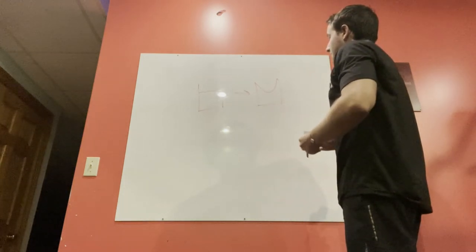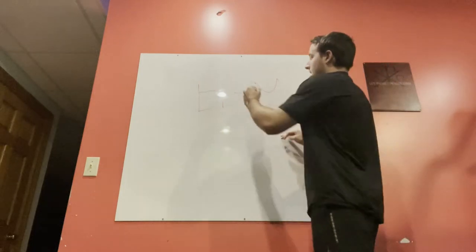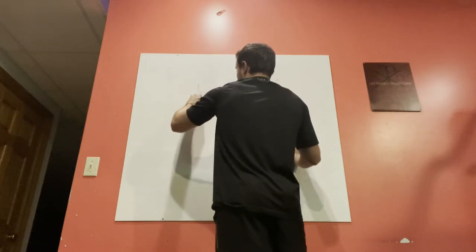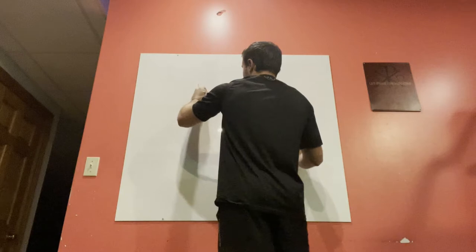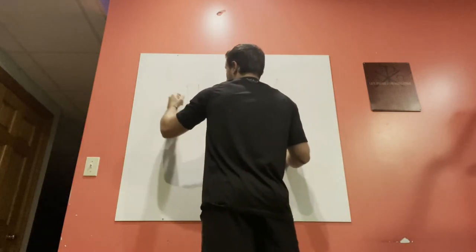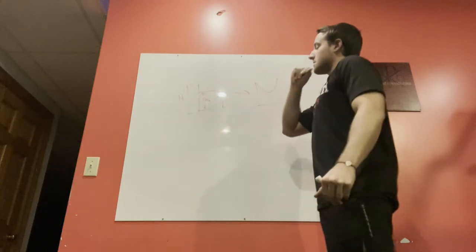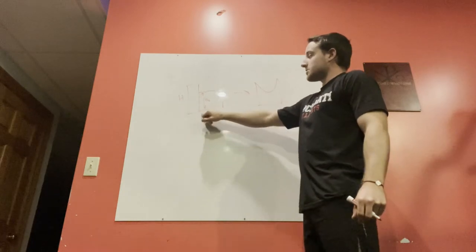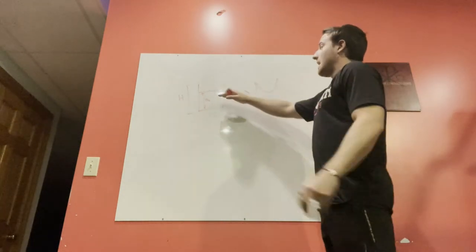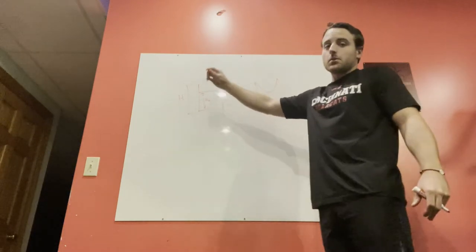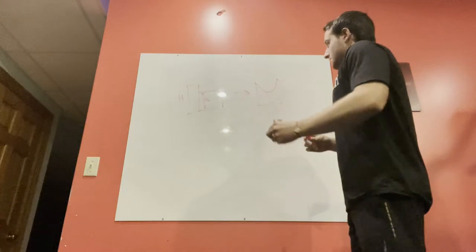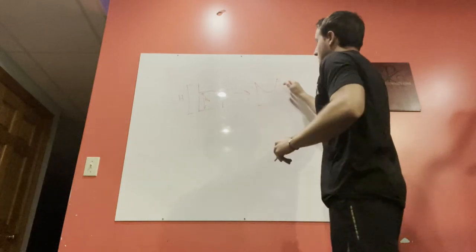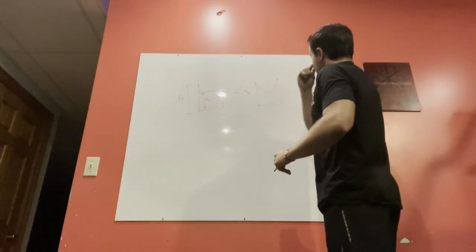We have h_naught here representing the initial fluid height, and then big H which is going to be the height of the cup. The height of the cup is our limit on how high the liquid can actually go. We can take this H and move it all the way across to give us our initial point.